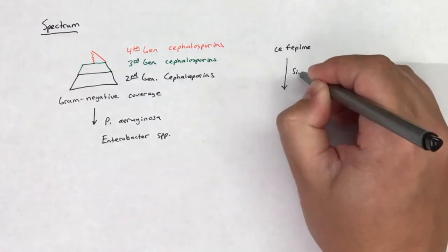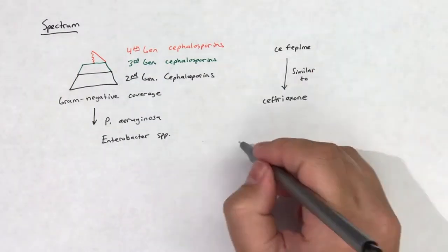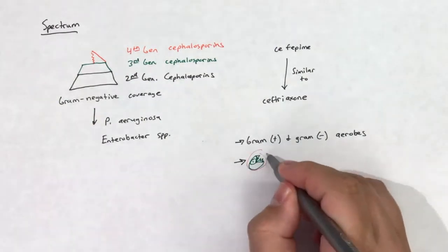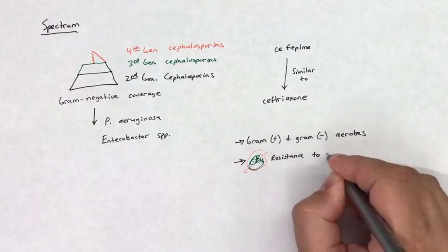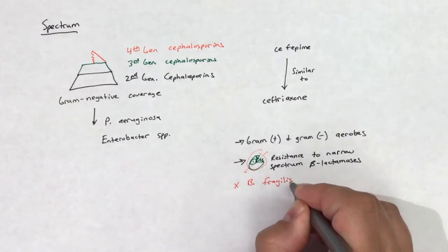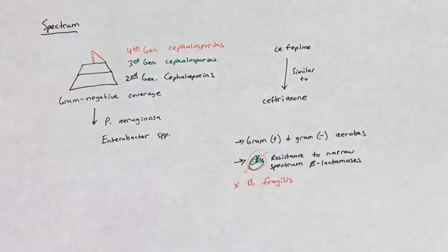Additionally, cefepime has a spectrum of activity similar to that of the third-generation cephalosporin ceftriaxone. This includes coverage for most gram-negative and gram-positive bacteria, resistance to narrow-spectrum beta-lactamases, and poor activity against B. fragilis.